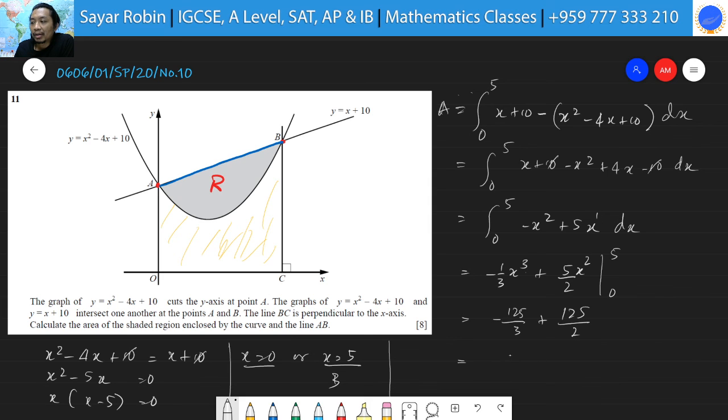It will become 6. So, the final answer must be 135 over 6. By the calculator, you can combine these two fractions. This is the final answer.